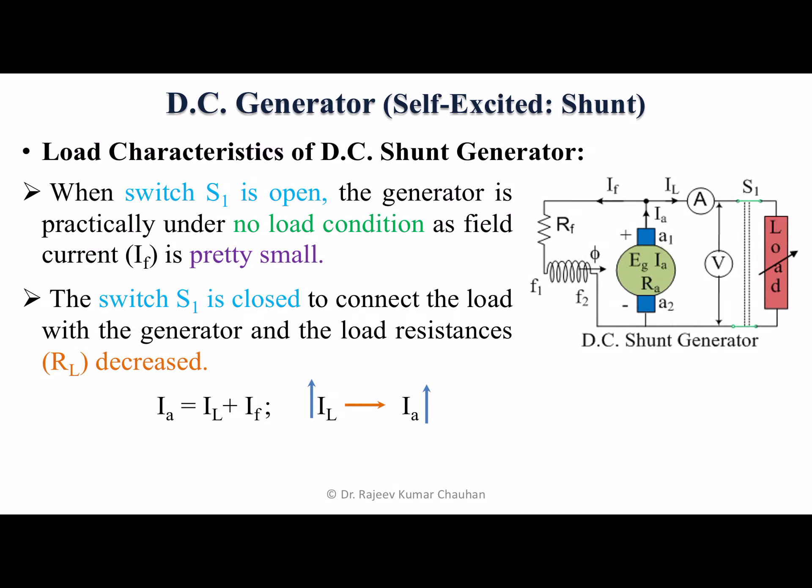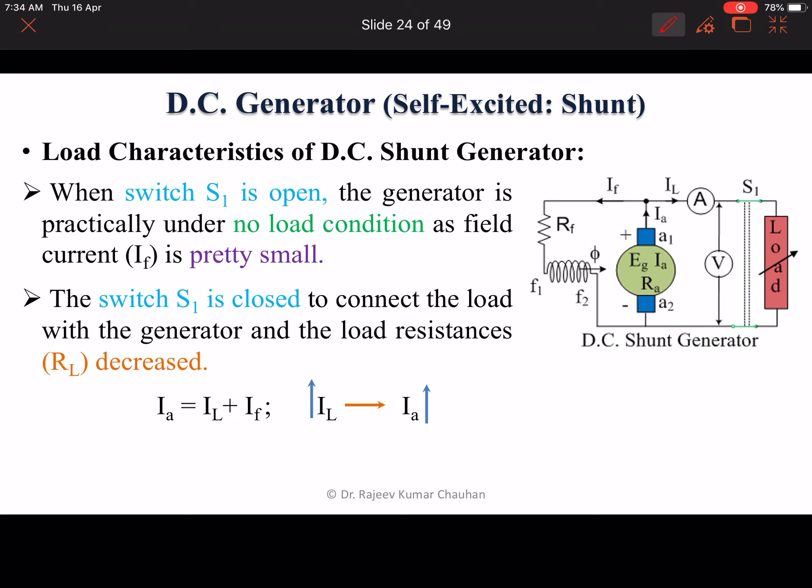Once this switch S1 is closed as shown in figure, now to connect the load with the generator, the load resistance RL decreases. As we decrease the load resistance RL, the load current IL will start increasing. From the circuit diagram we can see IA equals IF plus IL, so as the value of IL increases, the value of IA also increases.